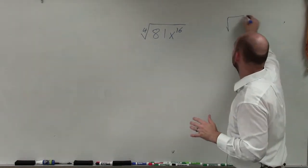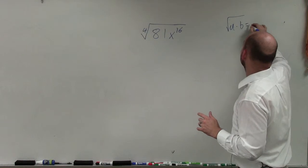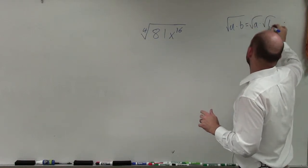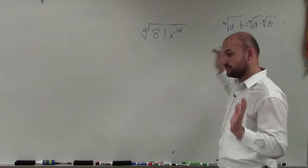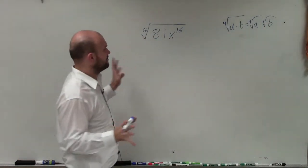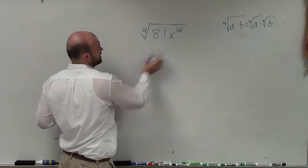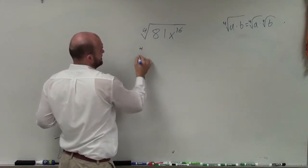One thing that we noticed is that if you have the square root of a times b, that equals the square root of a times the square root of b. And it doesn't matter if that's the fourth root or the square root. So the first thing I'm going to do is break these up into dealing with the fourth root of 81 and then dealing with the fourth root of x to the 16th.